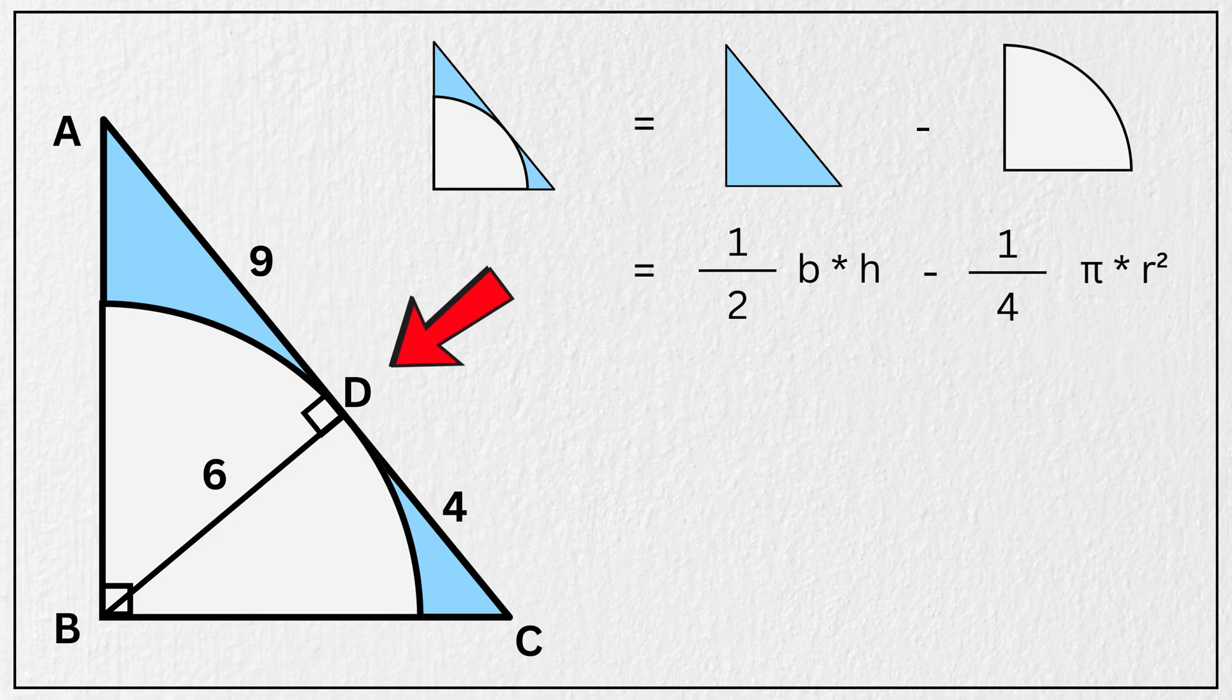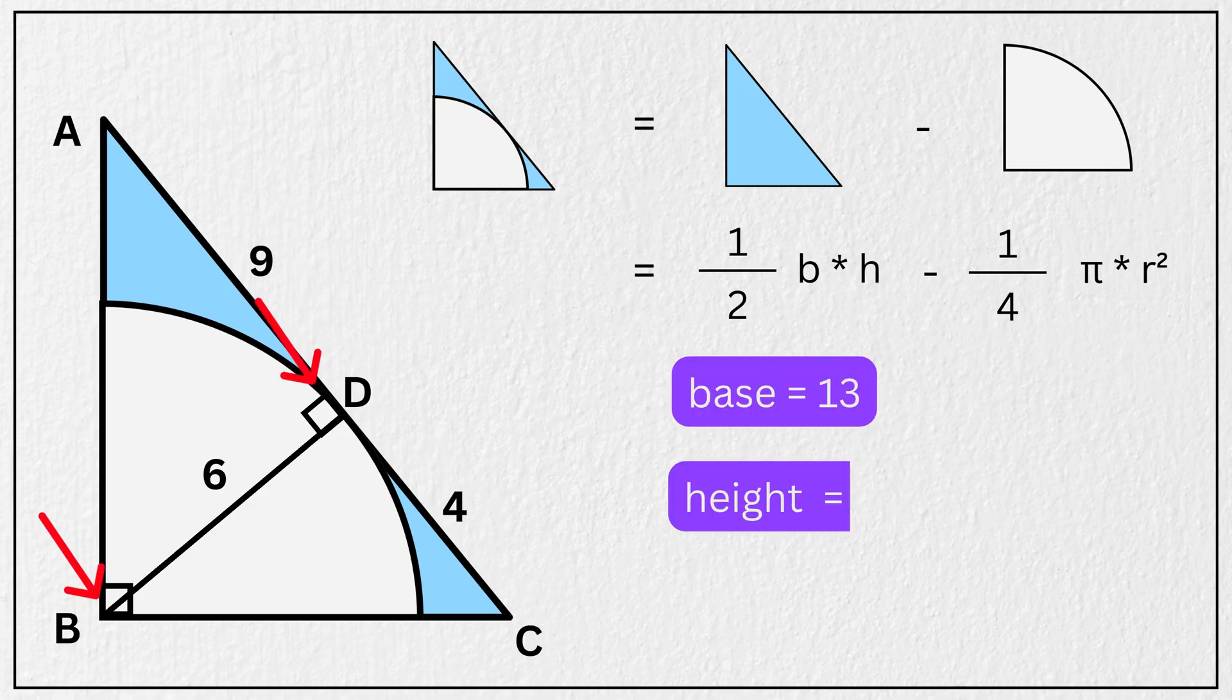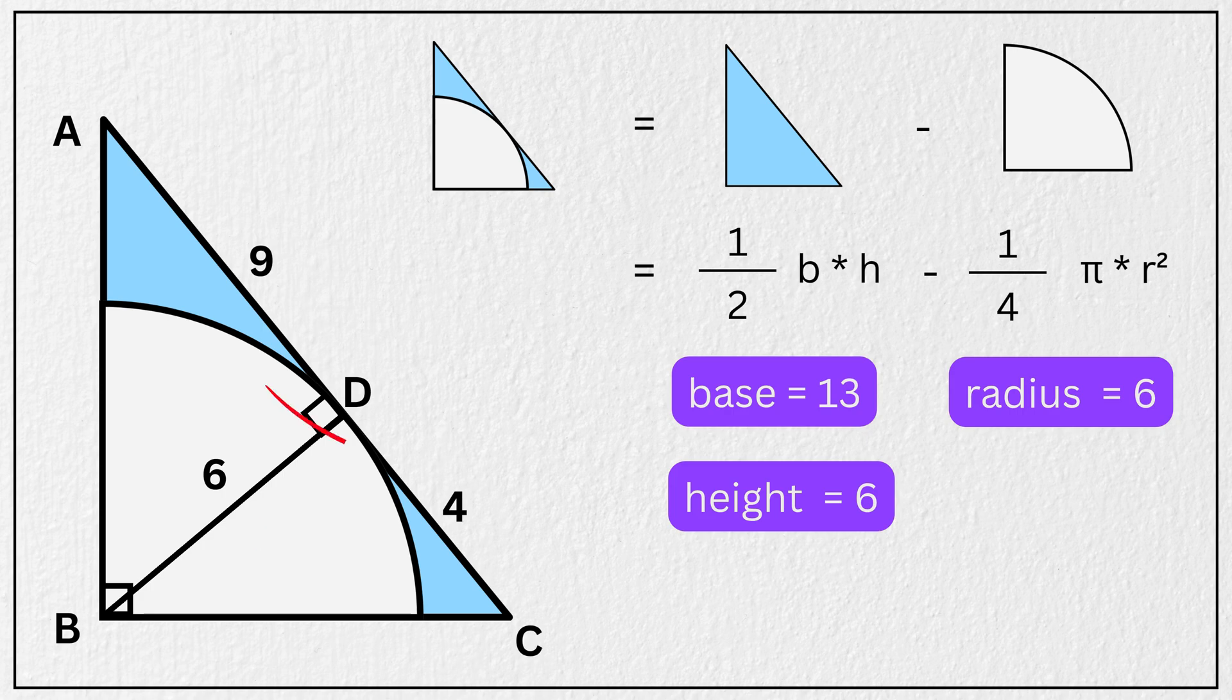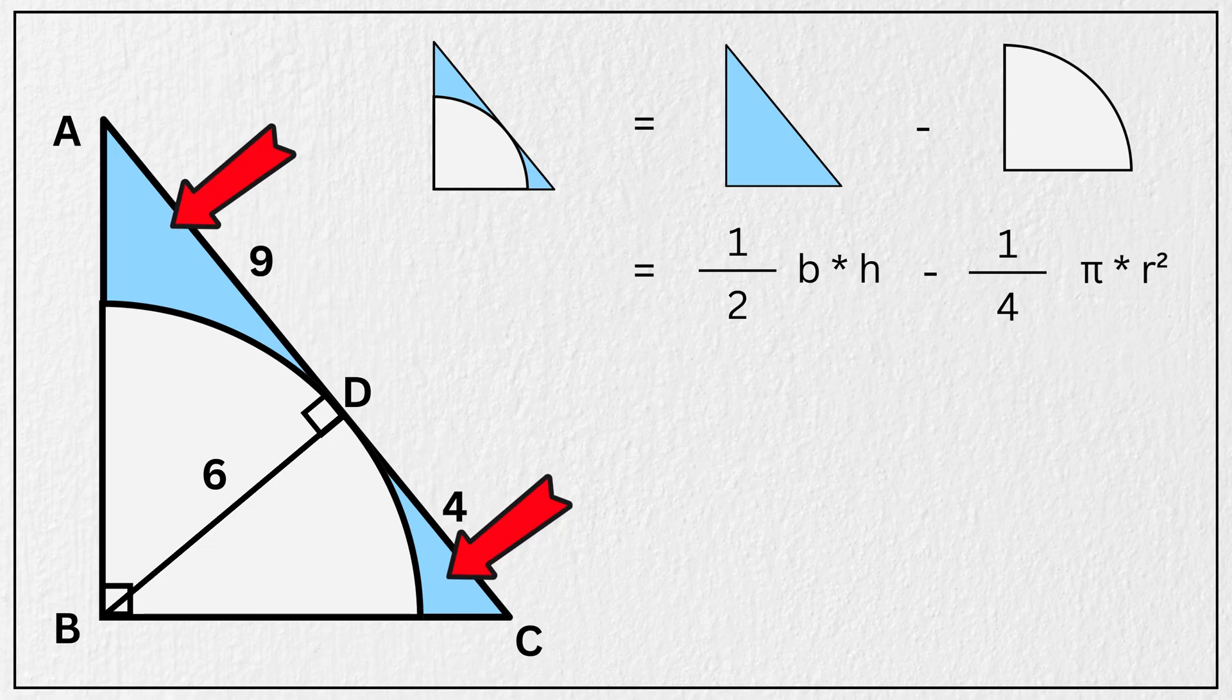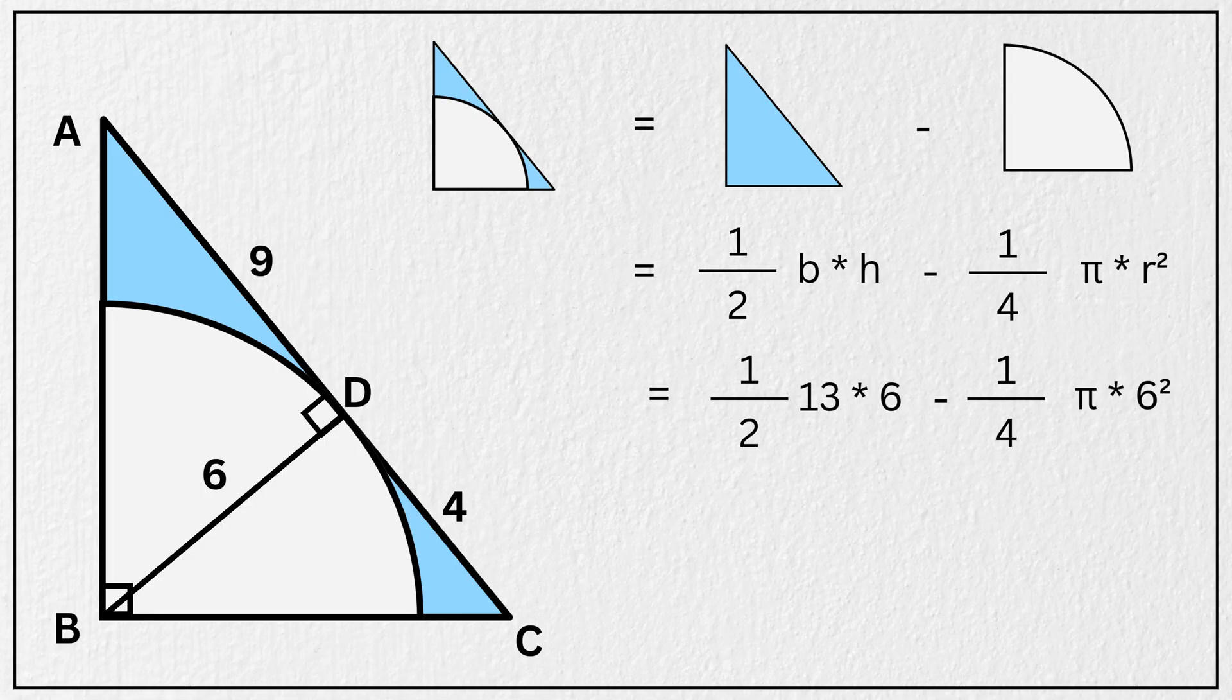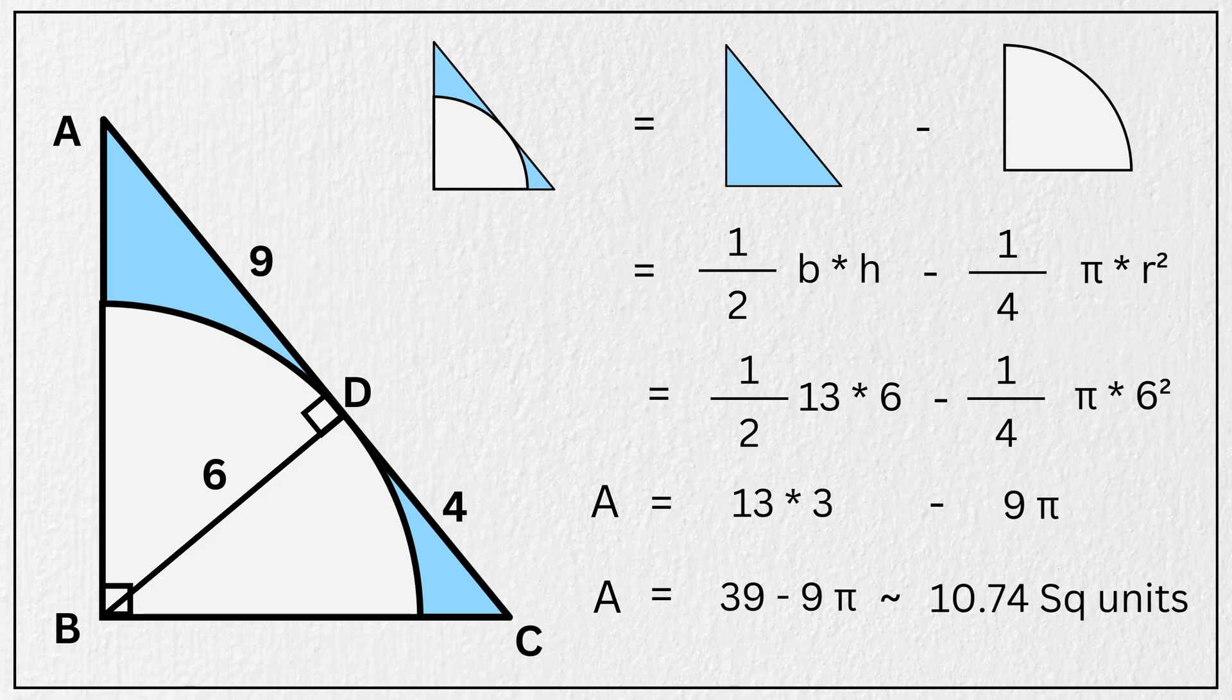Here, in our problem, the base is 13 units, the height is 6 units, and the radius is also 6 units. So substituting the values, we get the area of the blue shaded region is equal to 1 half times 13 multiplied by 6 minus 1 fourth times pi multiplied by 6 squared. Simplifying this, we get area is equal to 13 times 3 minus 9 times pi, which comes out to 39 minus 9 pi, or in decimal form, approximately 10.74 square units.